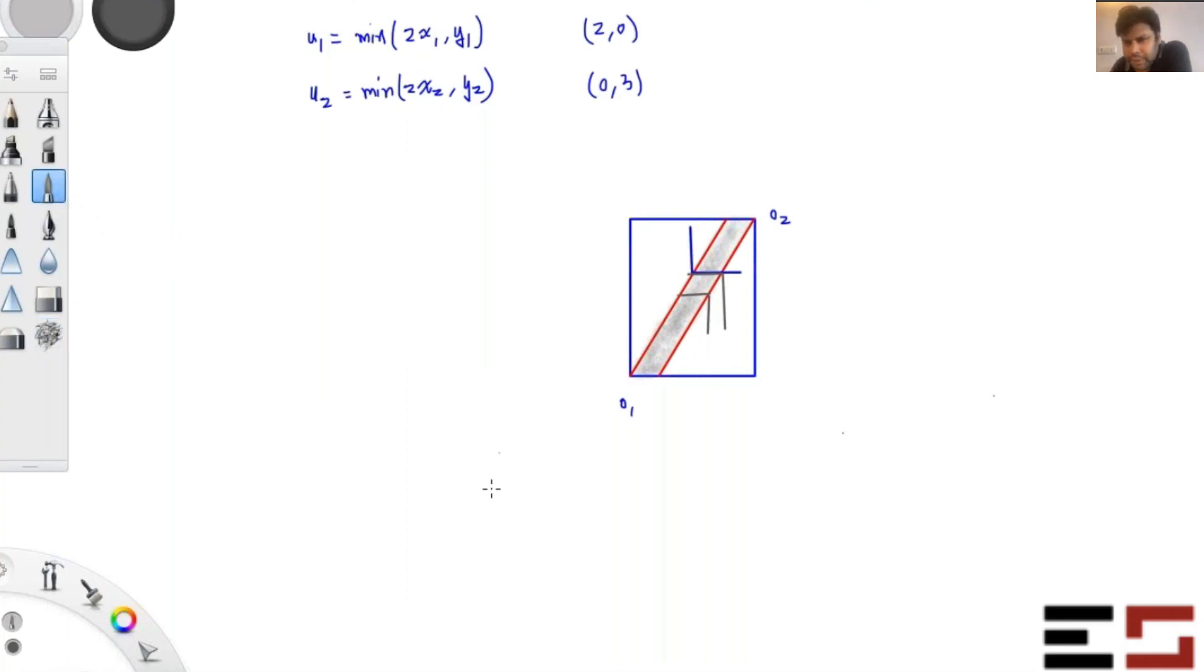These are the set of all efficient allocations. And what is the competitive equilibrium? Clearly this is a normal, this is where (2, 0) and (0, 3) is. This is where the endowment is. Now there are actually three possibilities if both prices are positive. If both prices are positive, then the budget line will look like this, right? And if the budget line looks like this, consumer one will choose this point and consumer two will choose this point.